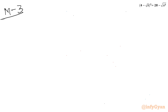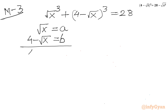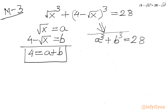Now Method Number 3. I write our equation as (√x)³ + (4 - √x)³ = 28. I use substitution: let √x = a and 4 - √x = b. Adding these two, we immediately get a + b = 4. From the original equation: a³ + b³ = 28.